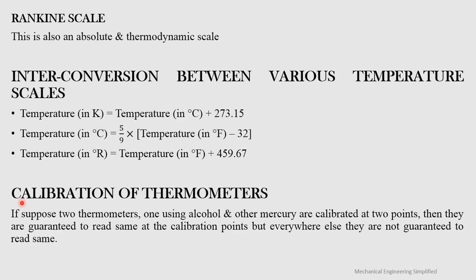Regarding calibration of thermometers: if two thermometers — one using alcohol and one using mercury — are calibrated at two fixed points, they are guaranteed to read the same at those calibration points. However, at all other temperatures they are not guaranteed to read the same value.